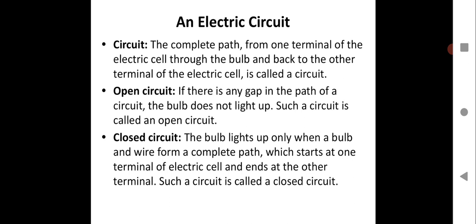Now, what is an open circuit and a closed circuit? If there is any gap in the path of a circuit, the bulb does not light up — such a circuit is called an open circuit. The name suggests the circuit is open, meaning the connection is not completed and electric current will not flow. The path of the circuit is not completed; there is some gap left, so the flow of current is not continuous and the bulb will not glow.